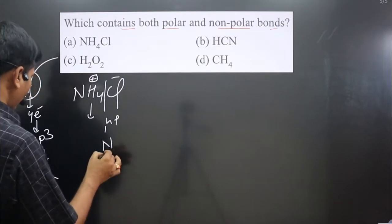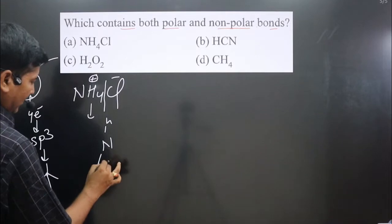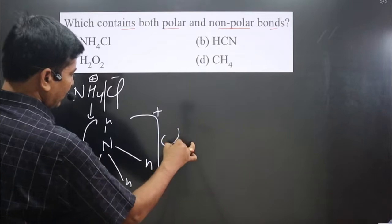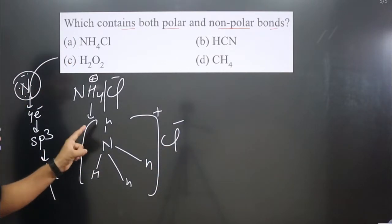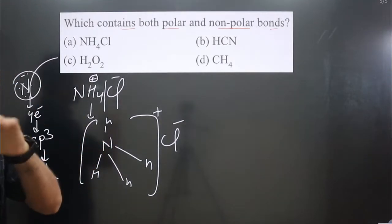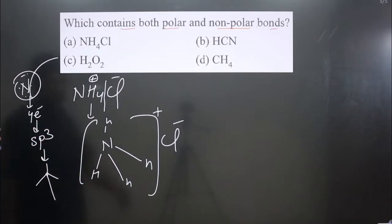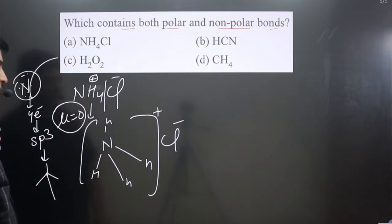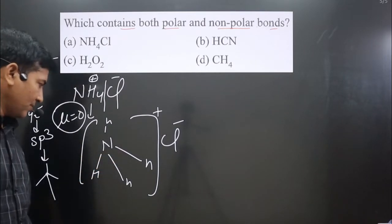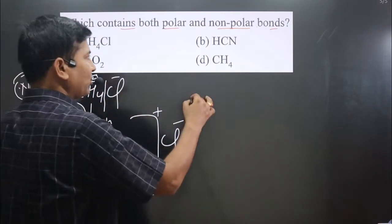With sp3 hybridization, the geometry of NH4+ is tetrahedral — a regular geometry. Nitrogen in the ammonium ion does not carry any lone pair. Regular geometry determined by hybridization means the dipole moment is zero. So NH4Cl is non-polar.